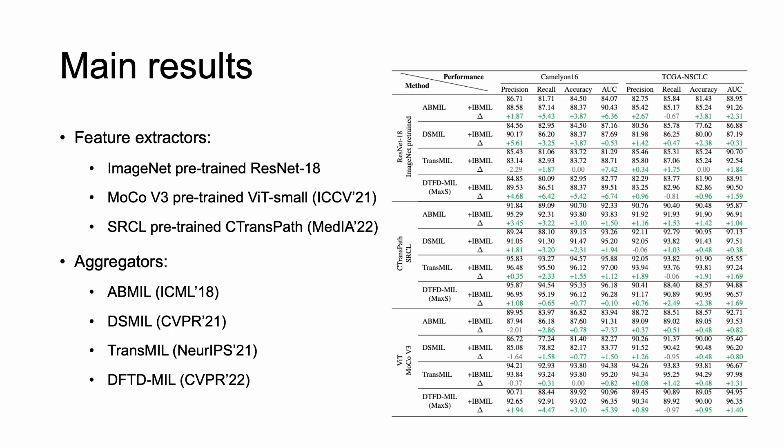And here is our main experiment. And we choose three feature extractors, including convolutional neural network, transformer-based network, and the hybrid network. And we also use four state-of-the-art aggregators. As can be seen, our method can bring consistent improvement under all situations.